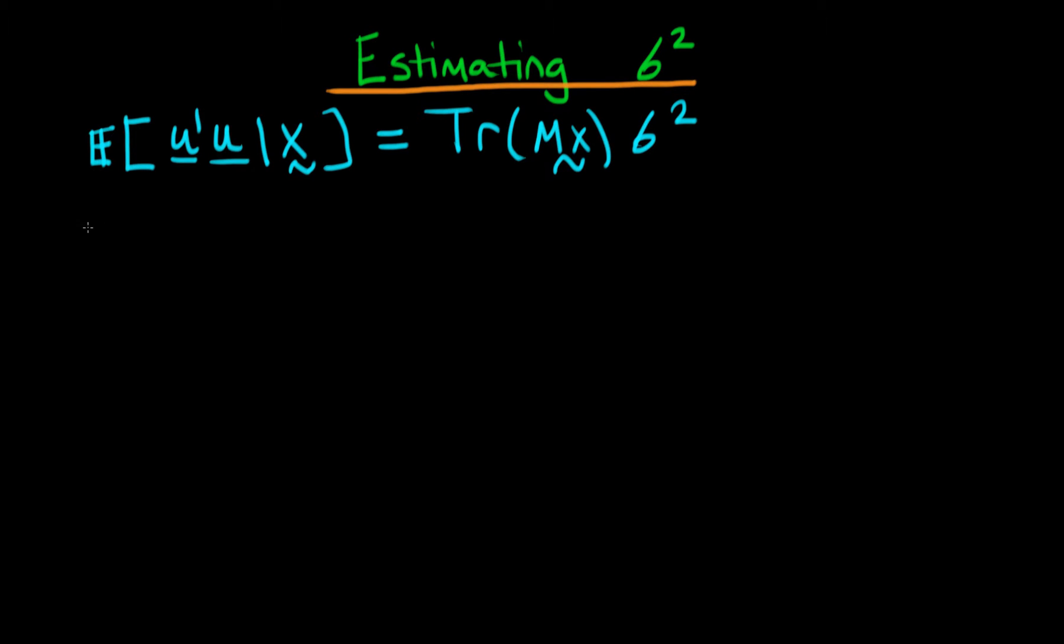So how about this quantity, the trace of mx? Well we know since we introduced the definition of mx that this is equivalent to the trace of the identity matrix minus px. Since the trace operator is just a linear operator, this is equal to the trace of the identity matrix minus the trace of px.